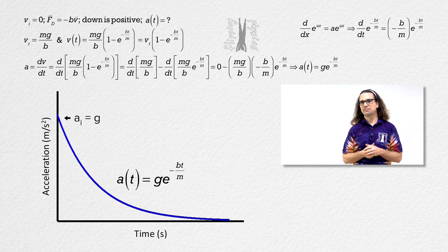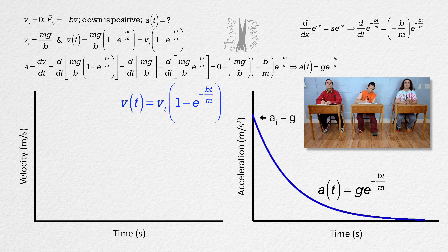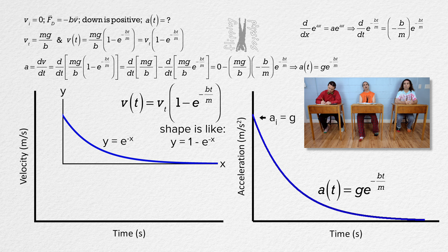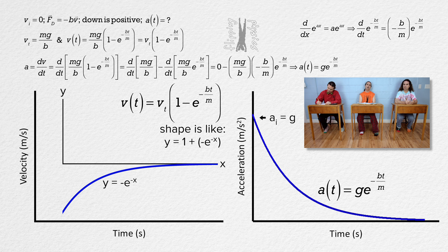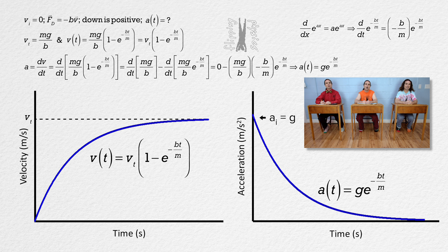Bo, what about the velocity as a function of time graph? The velocity as a function of time equals the terminal velocity times one minus e to the power negative proportionality constant times time over mass. The shape will be like y equals one minus e to the power negative x. We could think of it as y equals one plus negative e to the power of negative x. Negative e to the power negative x is just e to the negative x flipped over the x-axis. Adding y equals one shifts the curve up the y-axis by one. It is multiplied by the terminal velocity, so the initial velocity is zero, the final velocity asymptotes to the terminal velocity, and the curve is concave down.